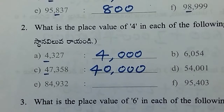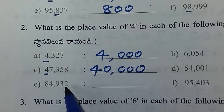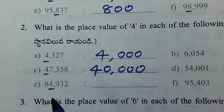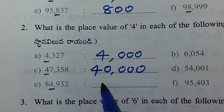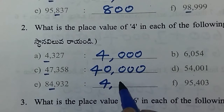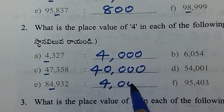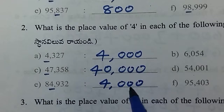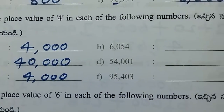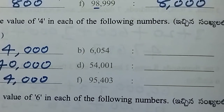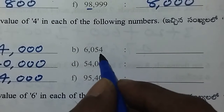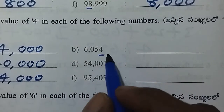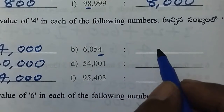Next. Here we go — 4 is not in the 1s, 10s, 100s, 1000s. And here we go: 4,000. In this case, 4 is in the 1s — so 4.